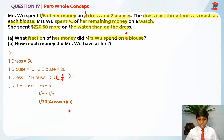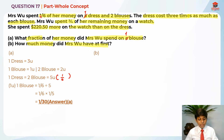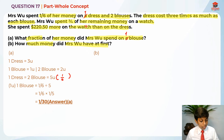Now let's move on to Part B: how much money did Mrs Wu have at first? At first means six over six — we need to find the total. The watch costs three quarters of her remaining money. Her remaining money after spending one sixth is six sixths minus one sixth, which equals five sixths. We don't yet know the price of the watch, so let's find it.